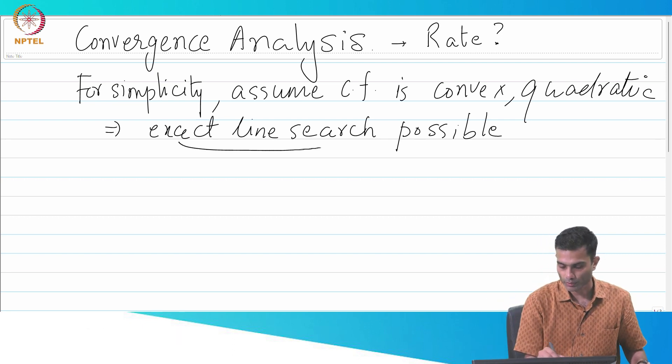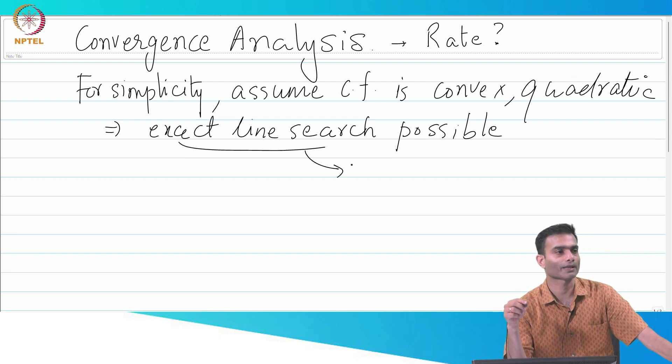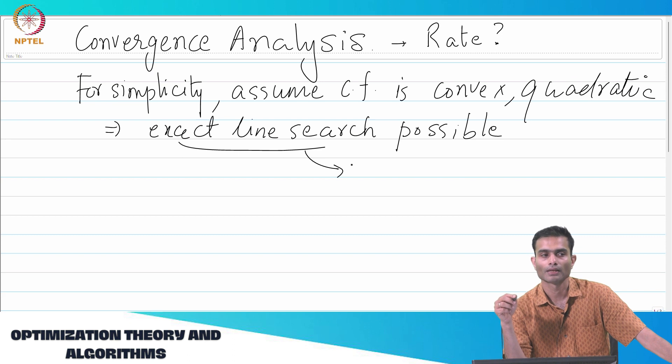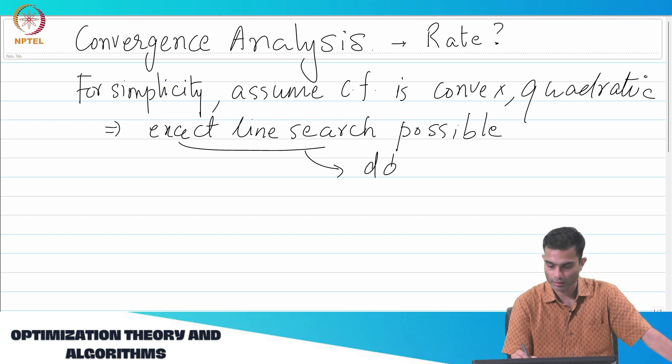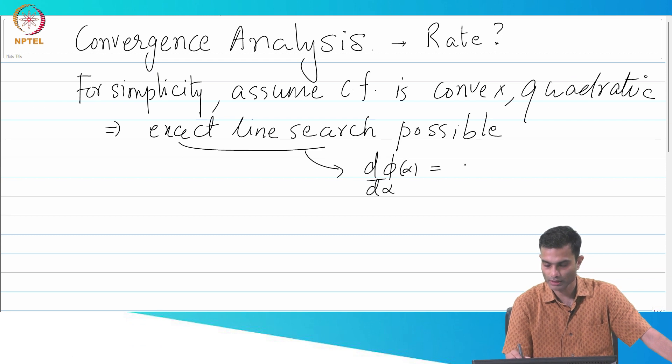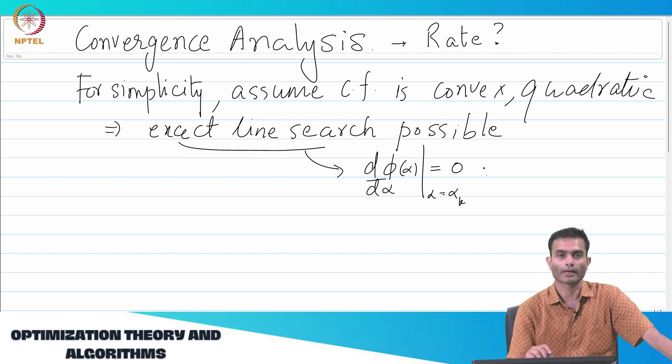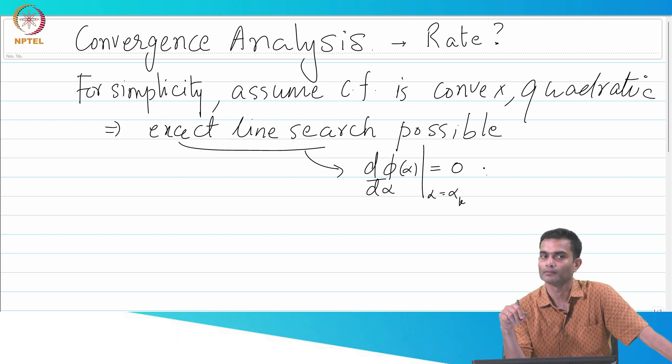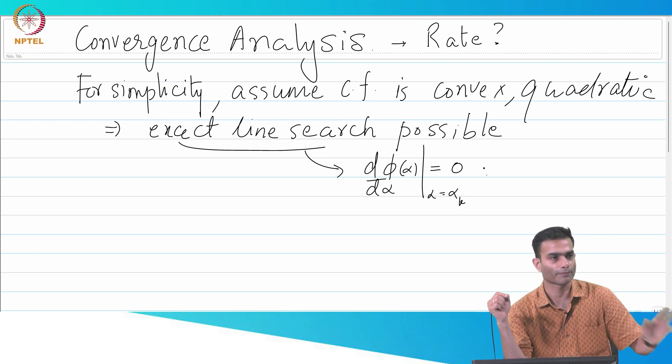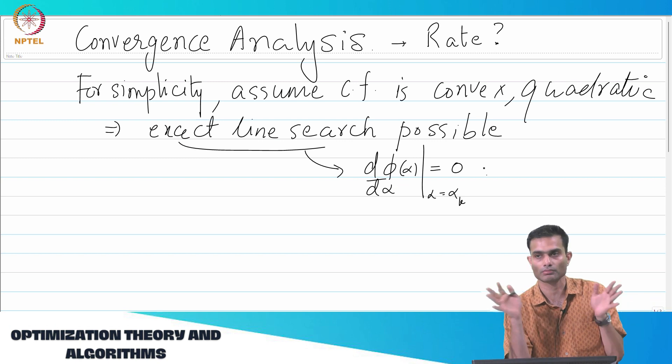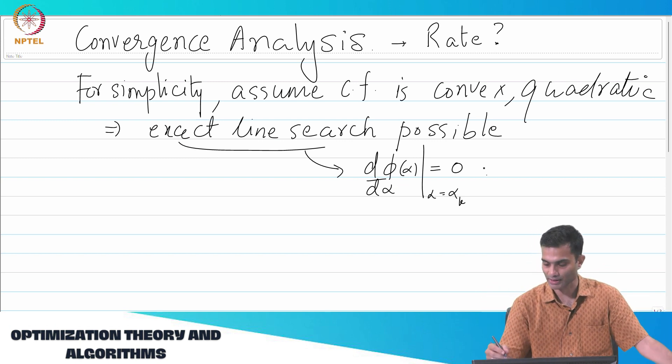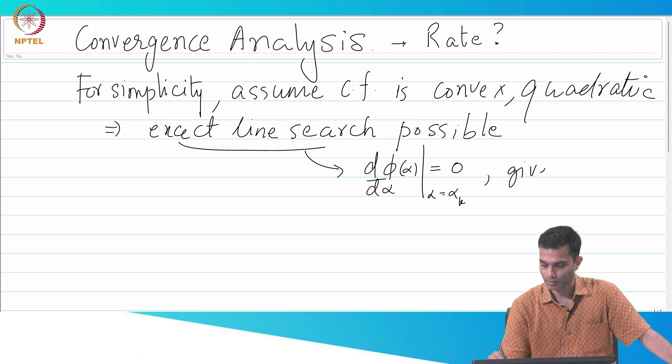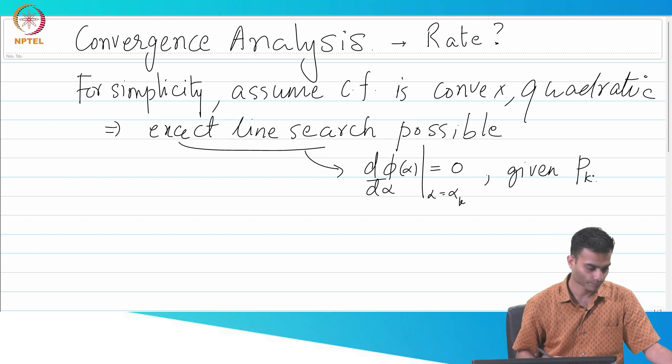Remember, what was the definition of exact line search? How did I define exact line search? d phi by d alpha is equal to 0, at alpha equal to alpha_k. That is the meaning. I can't do any better than this step length given what? What is assumed fixed over here? The direction. Pk is fixed. So I've been given the descent direction and I cannot change that. I'm going along that. What is the best I could do? It's alpha_k. Let's just note that over here: given pk.